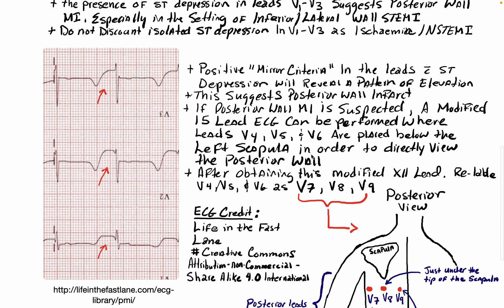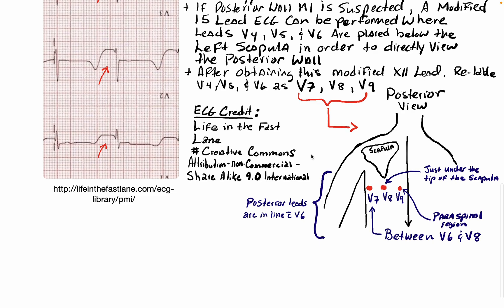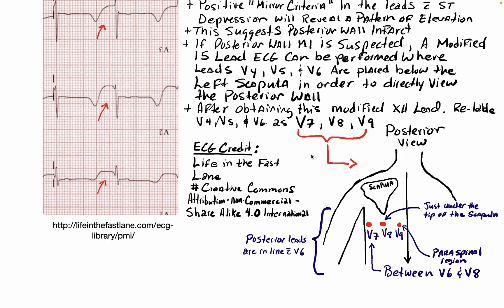You can also do a modified 15-lead ECG. Essentially you can do this with any of the precordial leads, but typically we'll use leads V4, V5, and V6 and move them off of the front and over to the back. I've drawn a little picture here. You can see the scapula, and just under the spine of the scapula, drop an electrode — that becomes V8. Then just medial to that, between V8 and the spinal column, in what's known as the paraspinal region or alongside the spine, drop another electrode — that becomes V9.